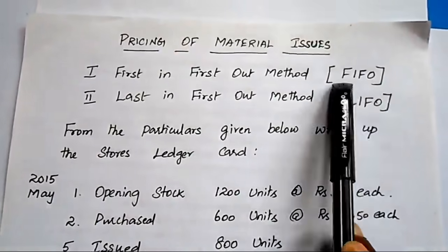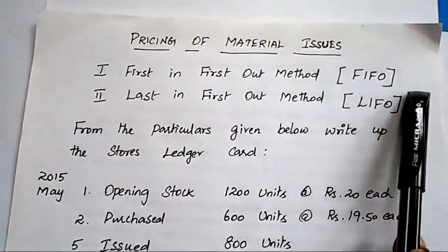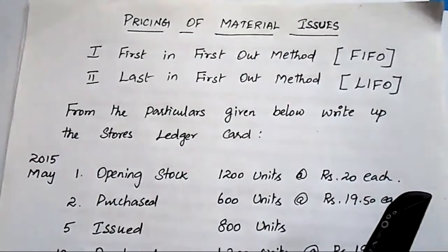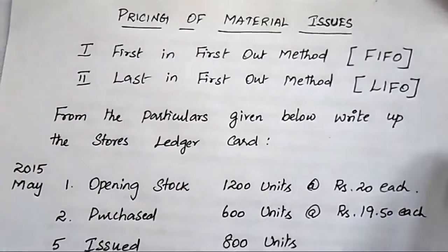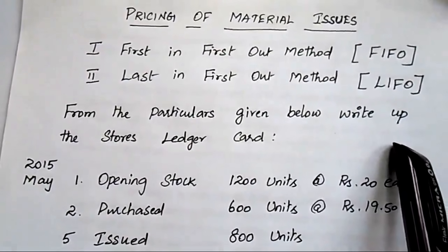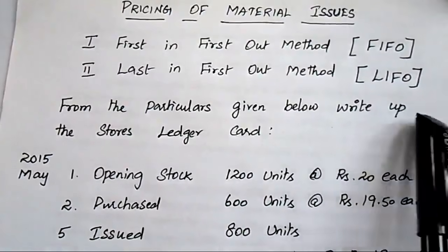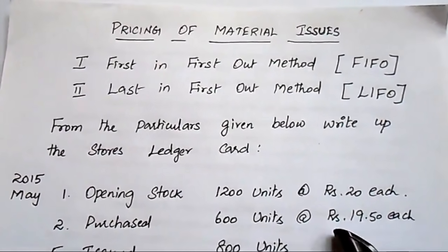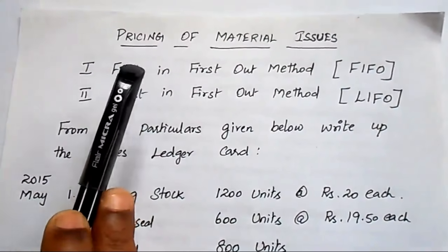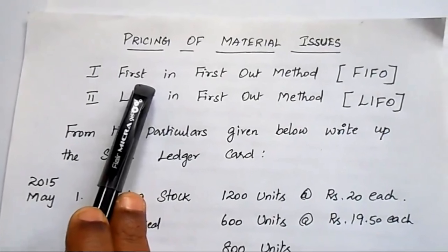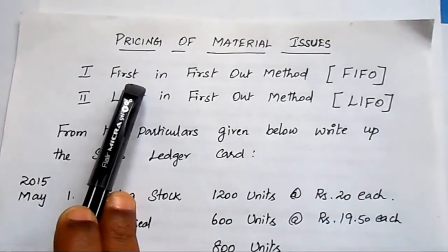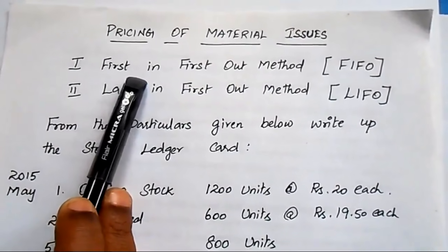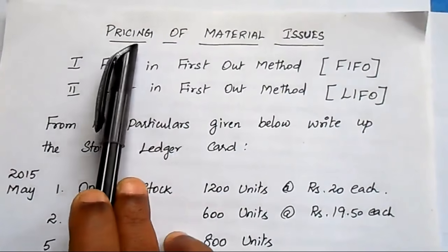According to the FIFO method, when an issue is made to the production department, the price of the earliest lot in stock is charged to the receiving department. When that lot is exhausted, the next lot is used at its respective price. This method resembles the queue system — we must exhaust the first lot entirely before moving to the second lot.